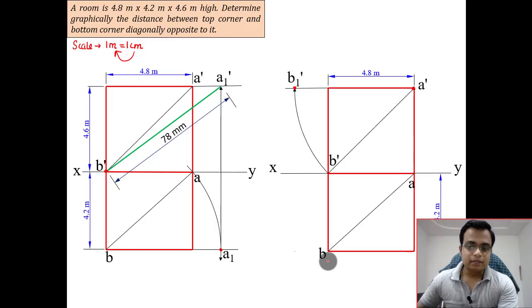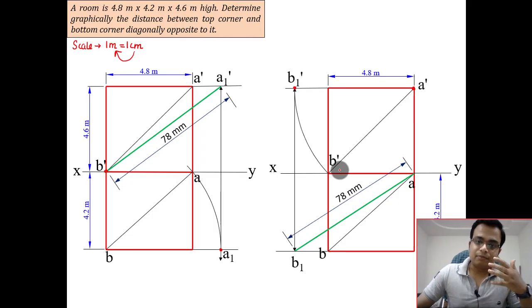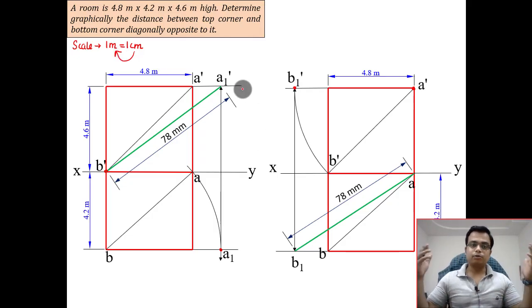This is the new location, that's B1. When you join B1 with A, you'll again get the same value, 78 millimeters, which is 7.8 centimeters, which on conversion equals 7.8 meters.